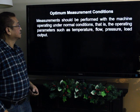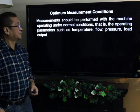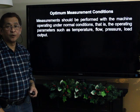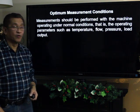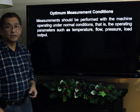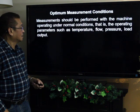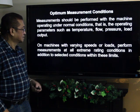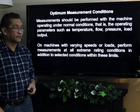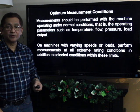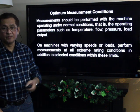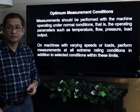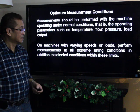Optimum measurement conditions: measurements should be performed with the machine operating at normal operating conditions — meaning operating parameters such as temperature, flow, pressure, and load output are at their normal readings. On machines with varying speeds or loads, perform measurements at extreme rating conditions such as maximum load and minimum load limits, as well as selected conditions within these limits.